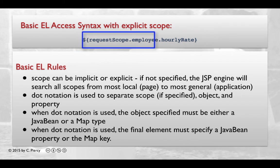In this example, we are explicitly defining the scope. We are then specifying the JavaBean employee. And then finally, we are providing a JavaBean property.